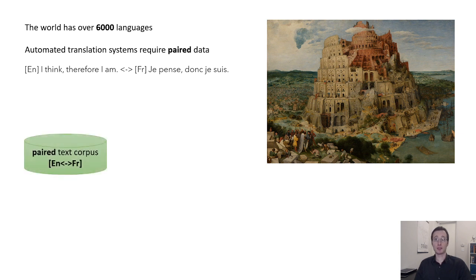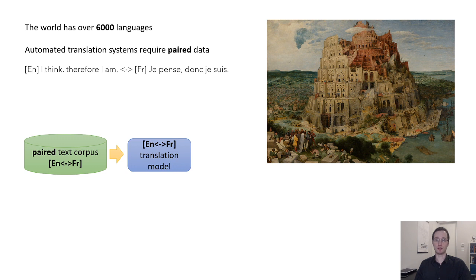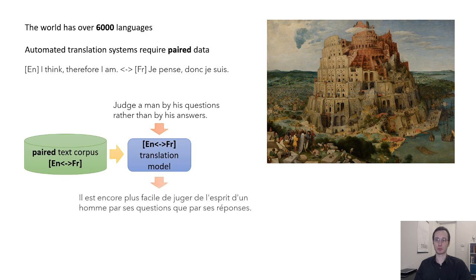The way we train a machine translation system is to take a large corpus of paired examples — sentences in one language with their corresponding translations to another — and train a translation model on this. Once that model is trained, it can take sentences in the source language and produce their corresponding translations in the target language.